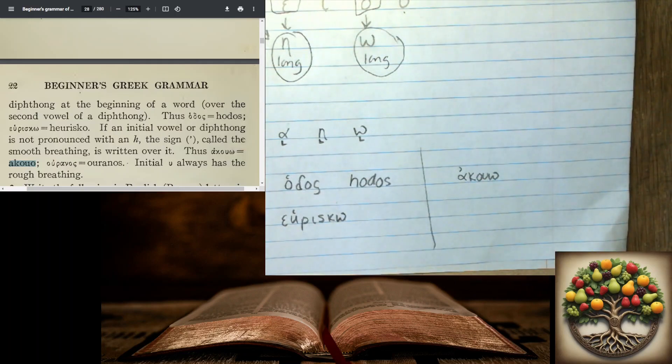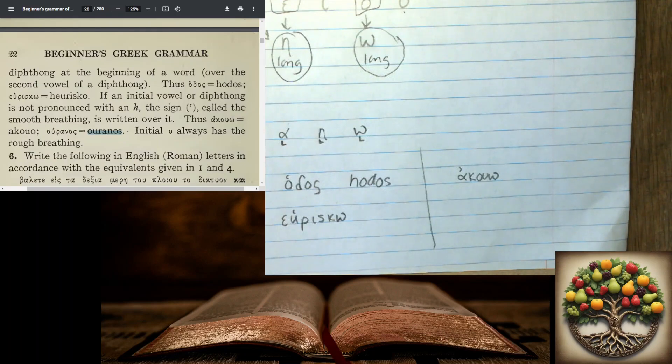And here's another example. Uranos. And here, Mr. Davis is telling us that the initial upsilon always has the rough breathing mark.